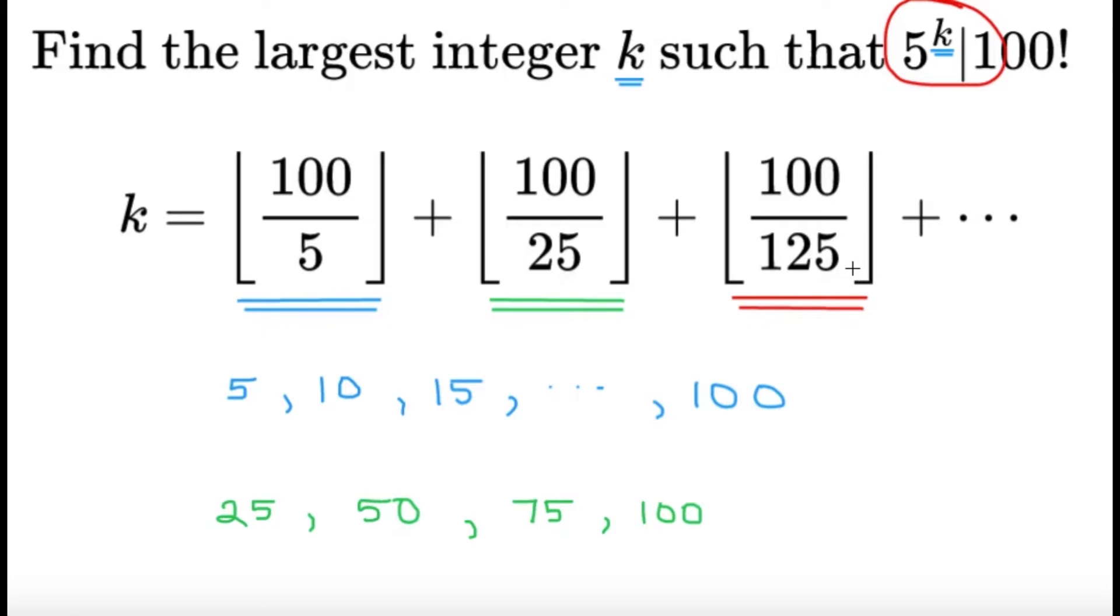Now, it is an infinite series, but there's nothing really to worry about because if we realize the floor 100 over 125 and so on, these are just 0 anyway. So, essentially, we're just adding 0. And just to give you guys a little bit of an intuition here, the first one, the 100 over 5, we're counting multiples of 5.